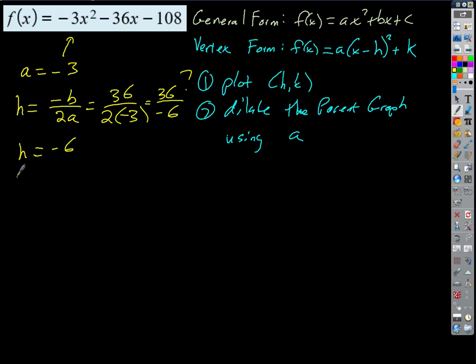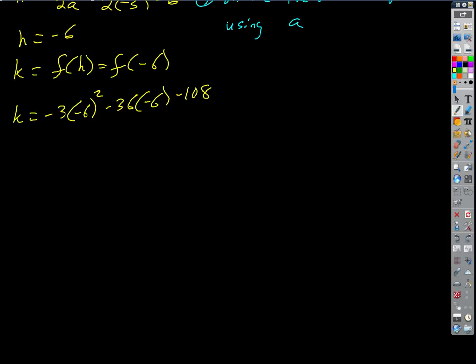So h is negative six. And how do we find k? Plug it in. Plug it in. Good. Whenever we want a y value, we just plug in the x value. So k is just going to be f of h, which is f of negative six. So we just plug it in here, right? Now remember what we want to do, and I can't emphasize this enough. When we're evaluating a function like this, any time we're plugging in values for x, we've got to put them in parentheses, right? So we end up then with k equals negative three times, instead of an x, we're plugging in a negative six squared, minus 36 times negative six, minus 108. So what's that going to give us? What's negative six squared? 36. Times negative three. There you go. Negative 108. Negative 36 times negative six is positive? 216. And what does that add up to? Negative 108 plus 216 minus 108 is zero. That's right.